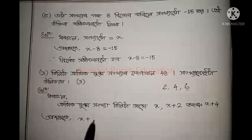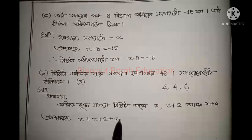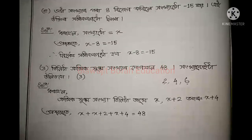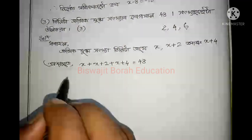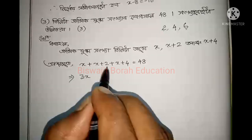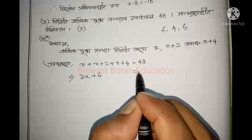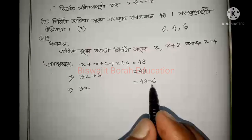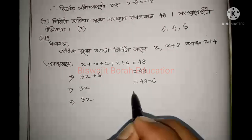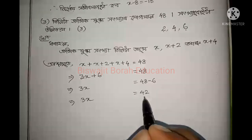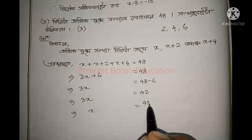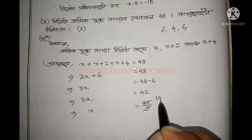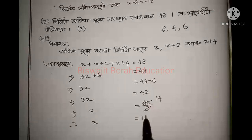So: x plus (x plus 2) plus (x plus 4) equals 48. Simplifying: 3x plus 6 equals 48. Therefore 3x equals 48 minus 6, so 3x equals 42. Thus x equals 42 divided by 3, which gives x equals 14. The three consecutive even numbers are 14, 16, and 18.